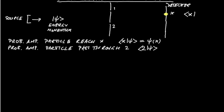So we can ask ourselves what the probability amplitude would be for the particle to reach x. Let me just rub that out, sorry I made a mess there. Probability amplitude for the particle to reach x after leaving slit 2.